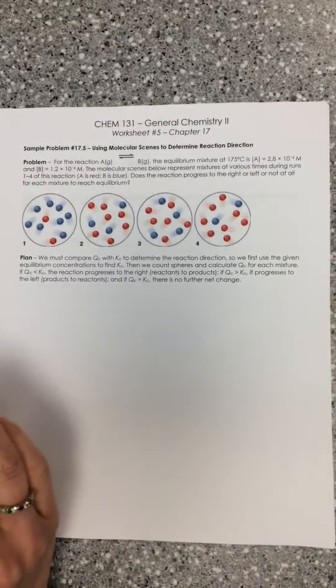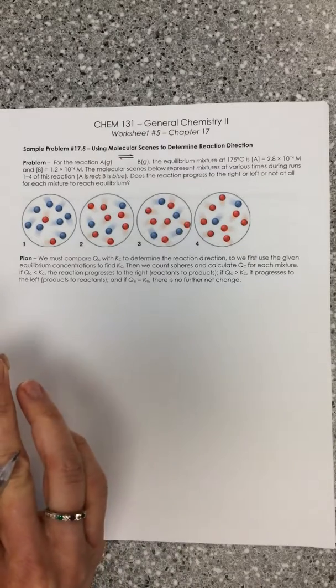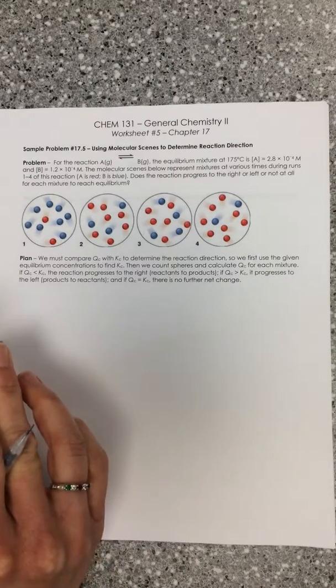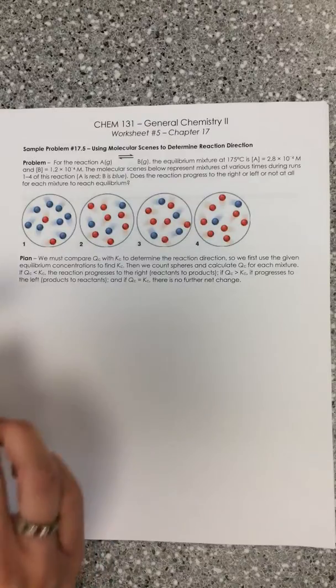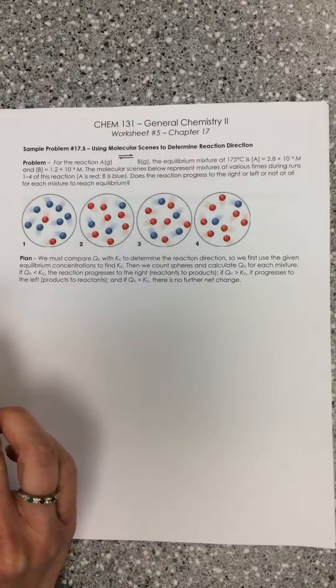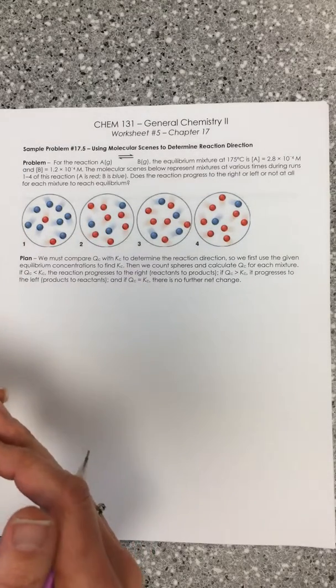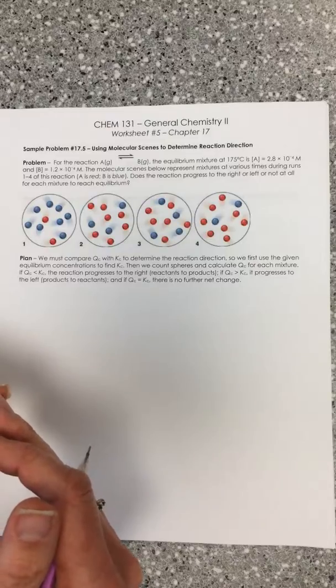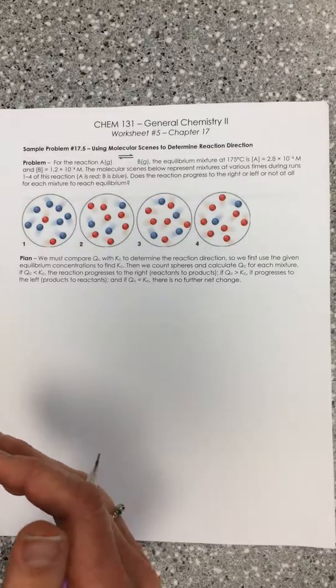So the first main skill that we learned in this chapter was thinking about equilibrium, equilibrium constants as both Kc and Kp, thinking about interconverting Kp and Kc, and then also manipulating equilibrium constants. If we're summing up reactions, how do we manipulate reaction coefficients or reaction equilibrium constants?